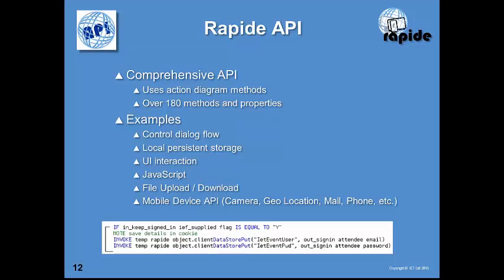RAPID also comes with a very comprehensive API — currently over 180 methods and properties accessed using dot notation action diagram statements. Examples include API methods for local persistent storage like cookies on a browser, interacting with JavaScript, file upload and download. On mobile devices, the RAPID API enables you to take a picture with the camera, access geolocation, and interact with the phone on the device.